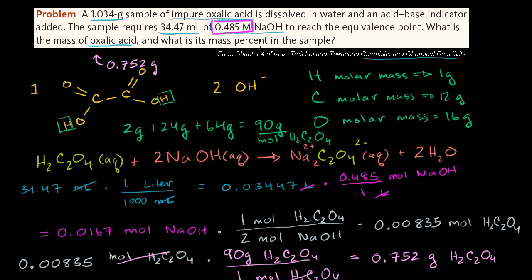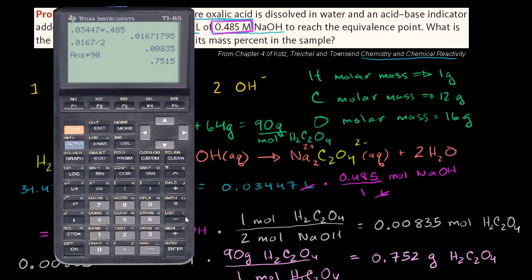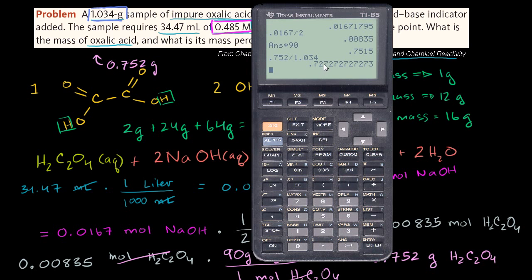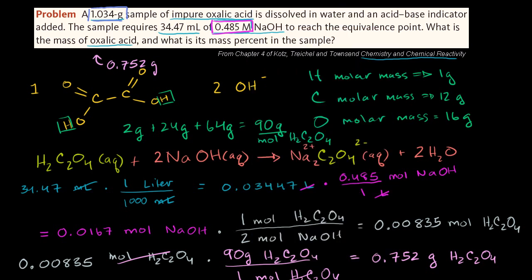The next part asks: what is its mass percent in the sample? The sample of impure oxalic acid was 1.034 grams. So we calculate what percentage 0.752 is of 1.034: 0.752 divided by 1.034 equals 72.7%. So this impure oxalic acid sample is 72.7% actual oxalic acid.